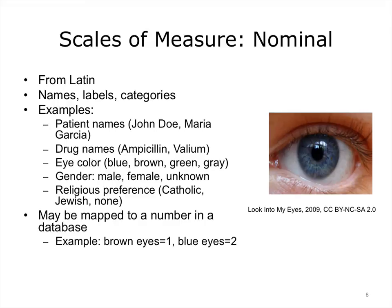The first scale of measure is called nominal data. Merriam-Webster defines nominal as of, relating to, or constituting a name. So data that are considered nominal are names, labels, and categories. For example, patient first, middle, and last names such as John Doe and Maria Garcia would be considered nominal data. Other examples include patient gender, eye color, religious preference, or drug names. In general, nominal data aren't used in statistical analysis other than as labels — you can count the number of patients with the same last name, but it makes no sense to subtract a John Doe from a Maria Garcia.